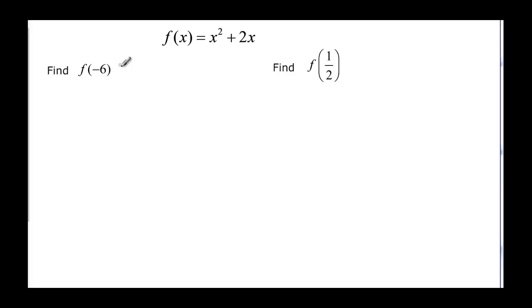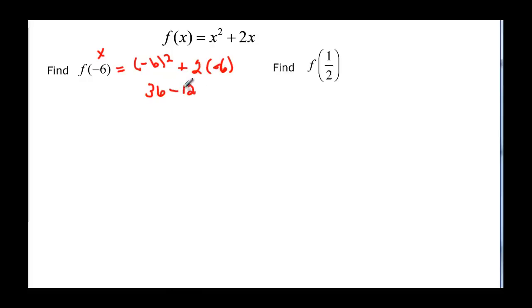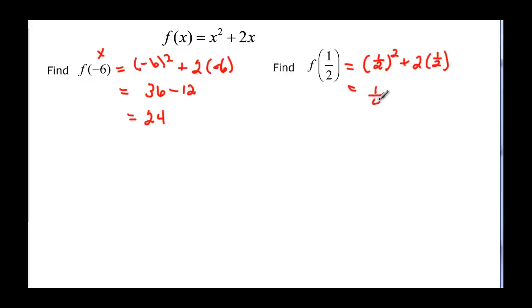So now we want to look at function notation and evaluate. Remember that negative six is actually x, so wherever I see x I'll replace it with negative six. So I've got x squared, so it's negative six squared, plus two times negative six. Negative six squared is thirty-six, and two times negative six is negative twelve, and thirty-six minus twelve gives us twenty-four. Now let's try it with one-half: one-half squared plus two times one-half. One-half squared is one-fourth, or 0.25, plus two times one-half would be one, so we end up with 1.25.